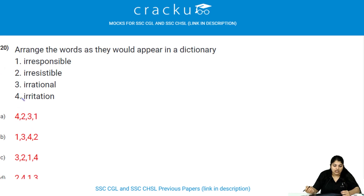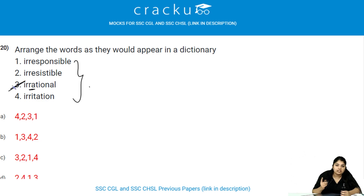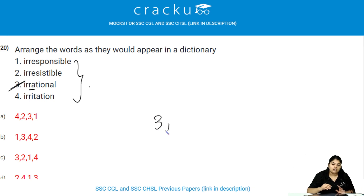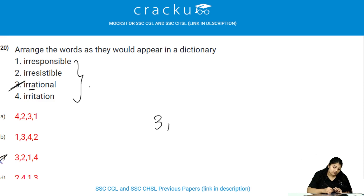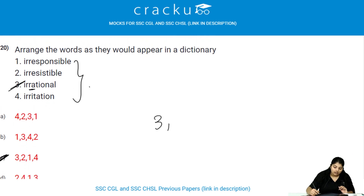Arrange the following words as they would appear in a dictionary. All words start with IR. The third letter comparison gives E, E, A, I — A comes first, so 'irrational' would be first. Checking the options, only one option starts with 3 in the first position. Therefore, the answer is option C. Always check the options to eliminate quickly and get the right answer.